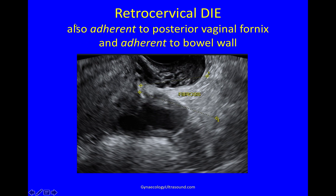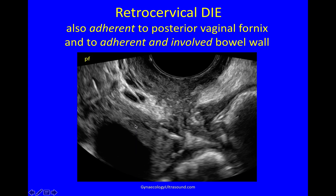Here again is the uterus; the cervix is up there somewhere. Here we've got the vagina and I'm looking at this white area in the longitudinal view. This is all fibrosis, and here this retrocervical DIE is adherent to the posterior vaginal fornix and adherent to bowel, and you can see an ovary is stuck into this area as well. Here we've got a nodule of deep infiltrating endometriosis which is adherent to the posterior vaginal fornix and adherent to and involving bowel.